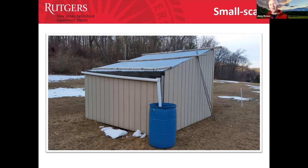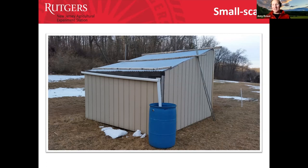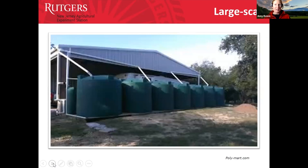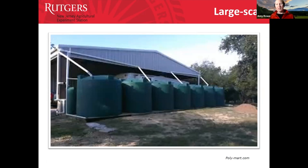We have a rain barrel on all of our chicken coops so we don't need pipes or running water out to them — they are all mobile coops that we move every week, so having water right there is really helpful for watering the poultry. This is a small-scale rainwater harvesting operation, but there are also very large-scale systems that can be installed for agricultural operations.